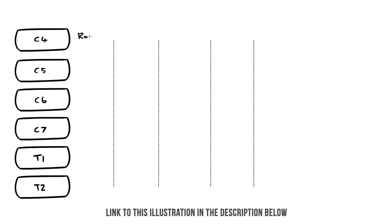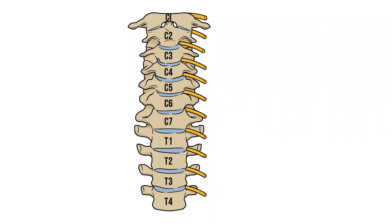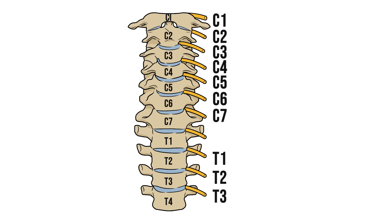To draw this out we need to start with the roots, so I'll add these here, imagining that they've just left the vertebral column. Now at this point you may be wondering why, when we have 7 cervical vertebrae, do we have 8 cervical spinal nerves. The reason is that nerves in the cervical region are named after the vertebra below, but the thoracic spinal nerves are named after the vertebra above. This leaves an orphan nerve between C7 and T1, and this is our 8th cervical nerve.